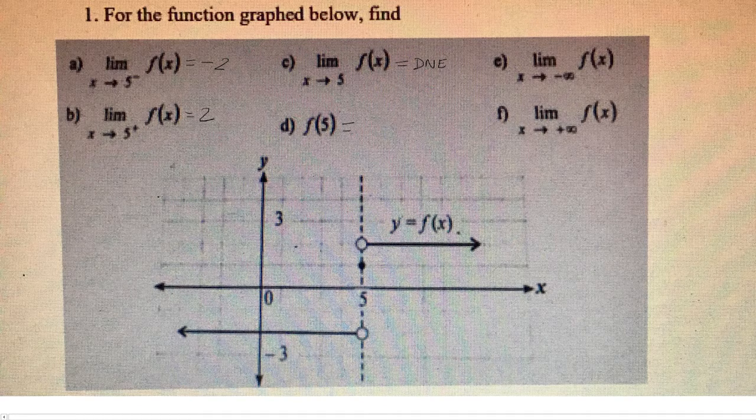Now f of 5 is going to be the value at x equals 5 that is shaded in. And for this, it's going to be at y equals 1.